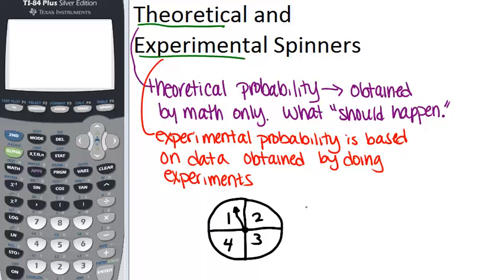For example, the probability of getting a two should be 0.25, 25%. Now that's the theoretical probability, based on math only, without actually spinning any spinners. If we were to actually conduct an experiment where we spun spinners, we might see that the experimental probability is slightly different.